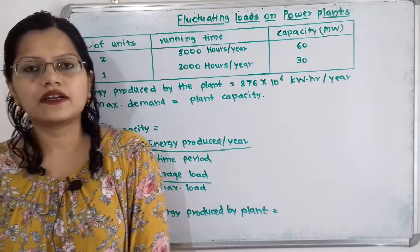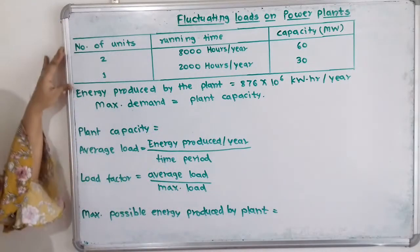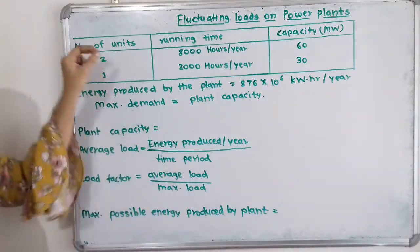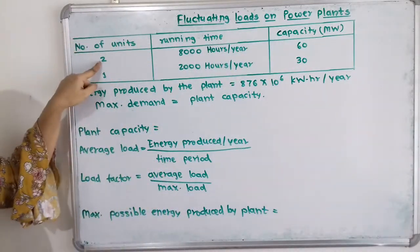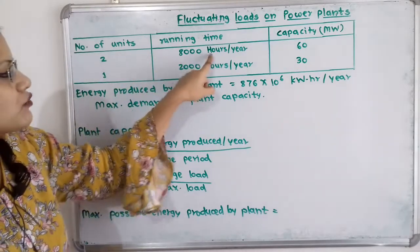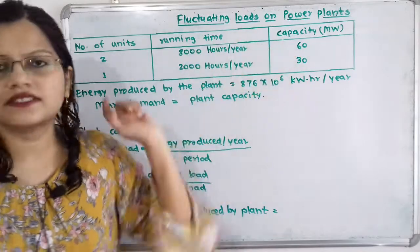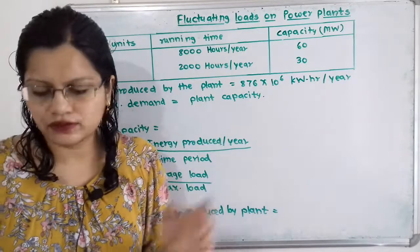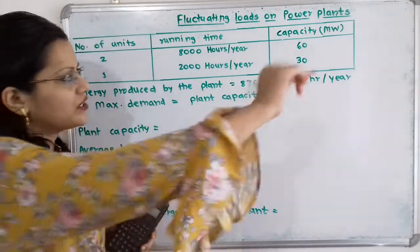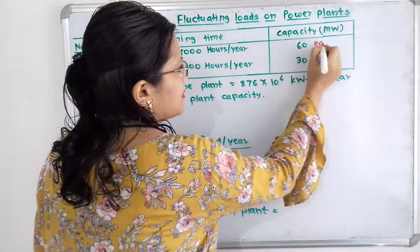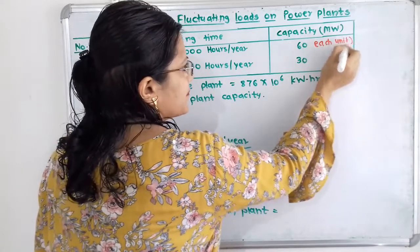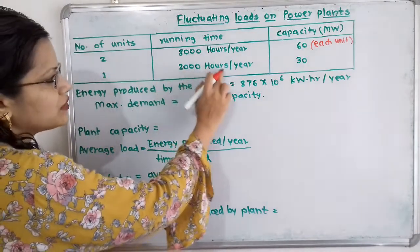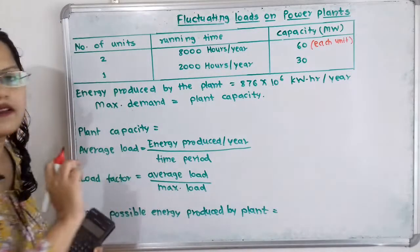Let us first understand what is the given data. We will make a table with columns: number of units, running time, and capacity. In this power plant, number of units is 2, running time is 8000 hours per year, and capacity is 60 MW each. Then, number of units is 1, running time is 2000 hours per year, and its capacity is 30 MW.